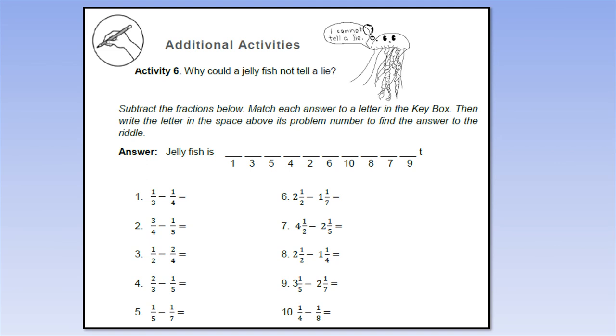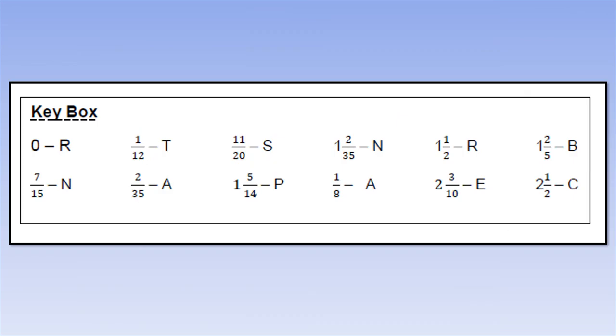Additional activities. Activity number 6: Why could a jellyfish not tell a lie? Subtract the fraction below, match each answer to the letter in the key box, then write the letter in the space above its problem number to find the answer to the riddle. There are numbers there. Whatever answer to that number, find it in the key box for what letter is there, write it above the number. Very good. This is the key box of the problem we need to solve. Our session in this module has finished. Thank you so much for supporting my YouTube channel. Don't forget to like, subscribe, and hit the notification bell so we can learn more in the next videos. This is Sir Alan Madino. Thank you so much for watching and God bless you all.